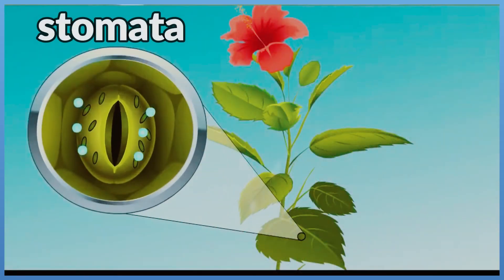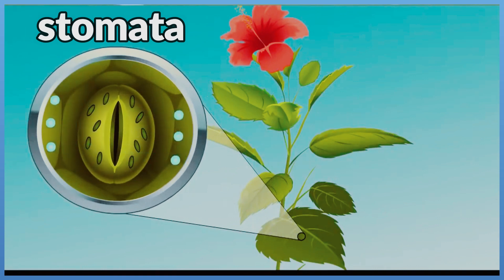Stomata. They are pores on the surface of plant's leaves that allow gases to move into and out of the plant.